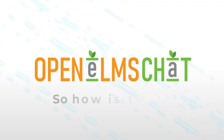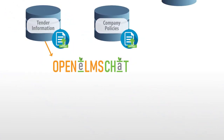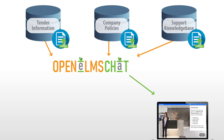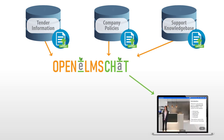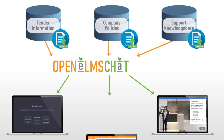So how is this done? The best thing about Open Elms Chat is that it is so easy to use. Simply upload your documents and that's it. Open Elms Chat will get to work and create the AI for you. Once this is done, the AI can be deployed using Open Elms Chat interfaces to create e-learning, presentations, or serve as a chatbot for information-giving scenarios.